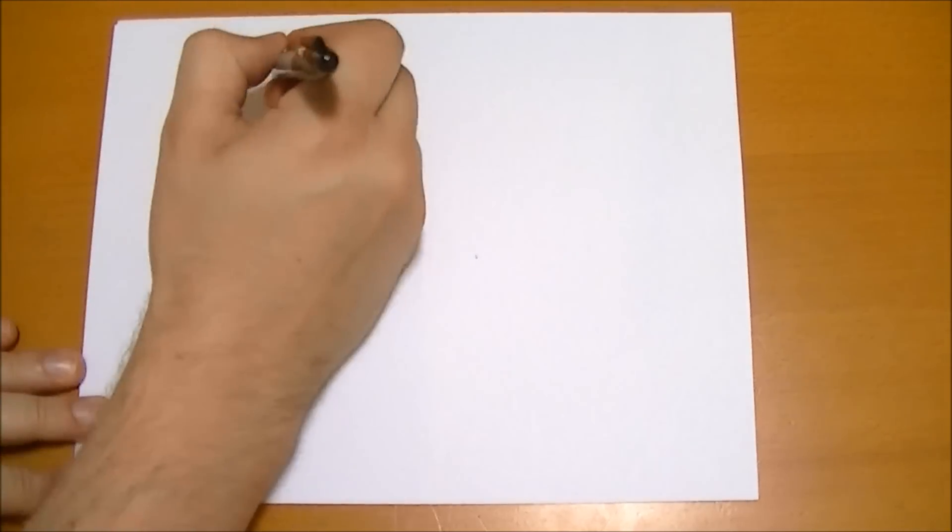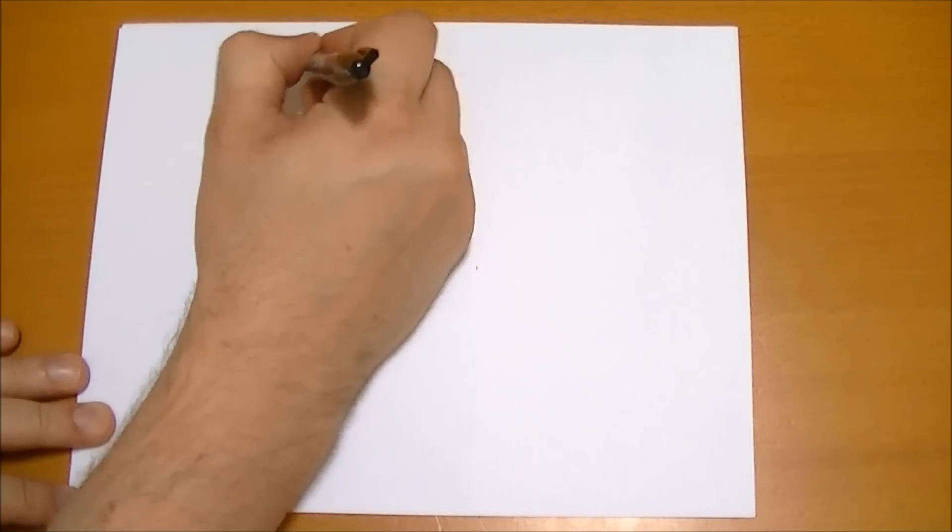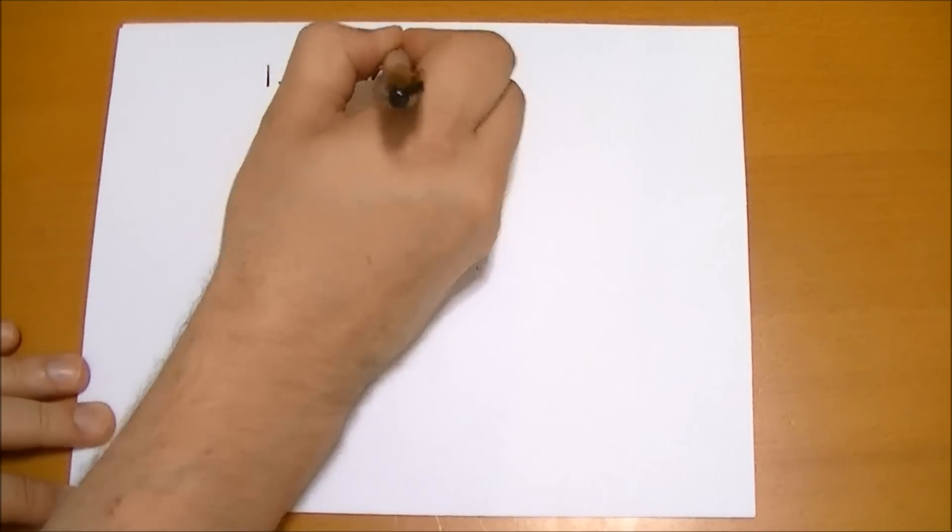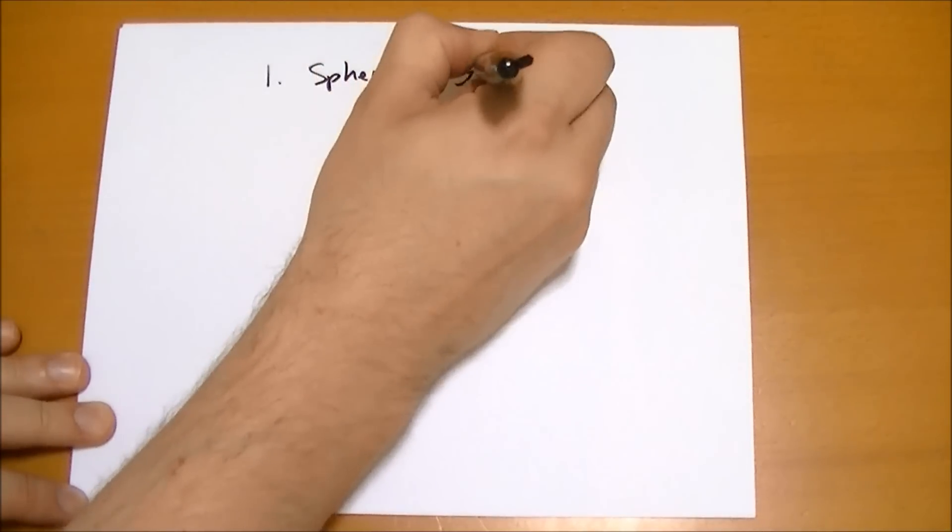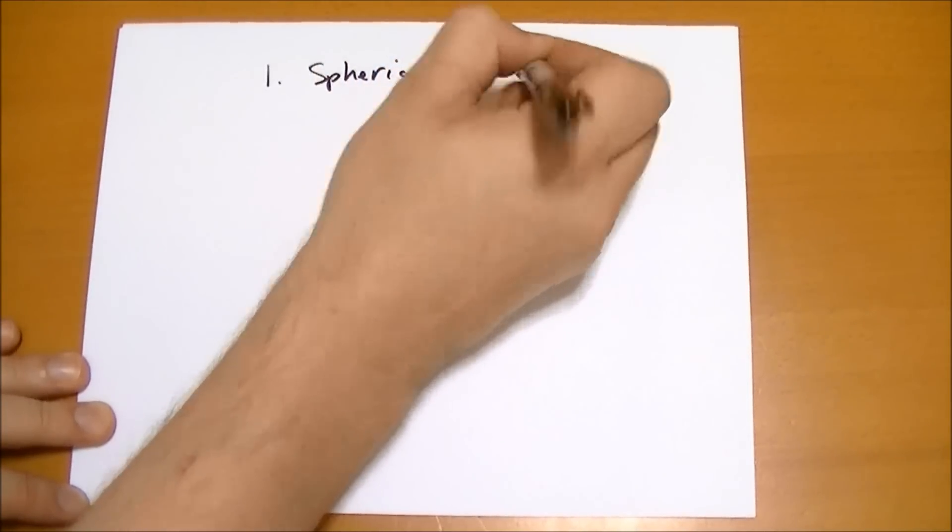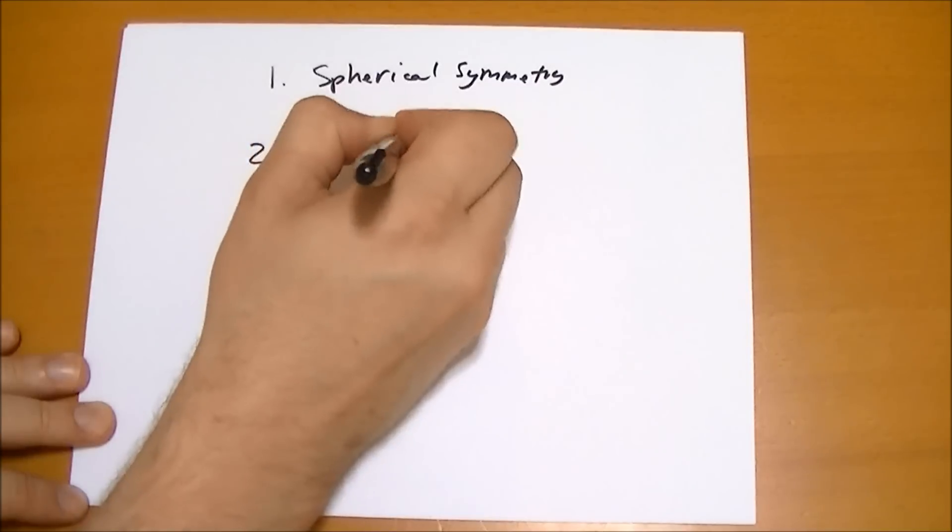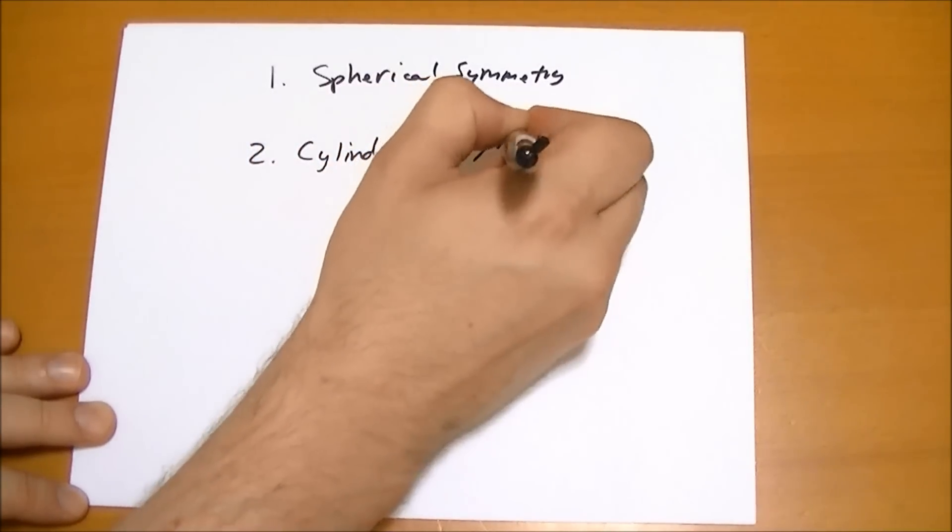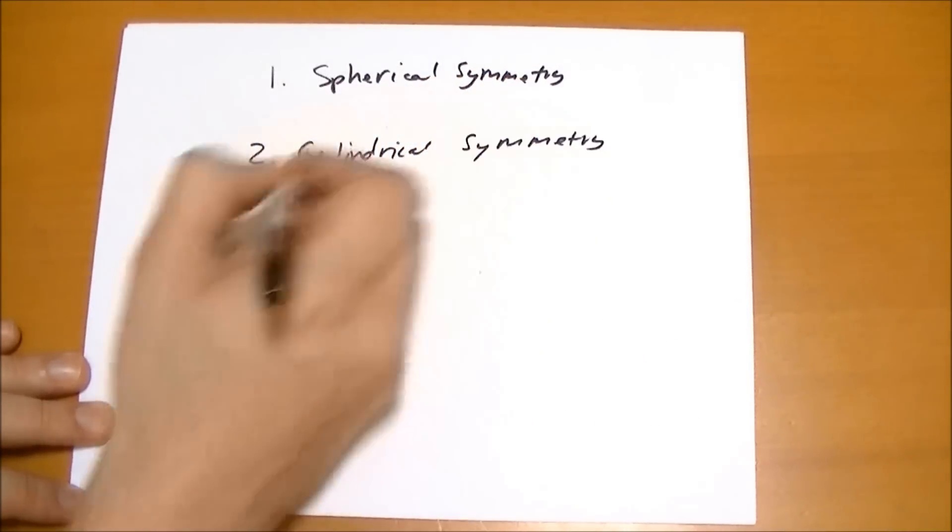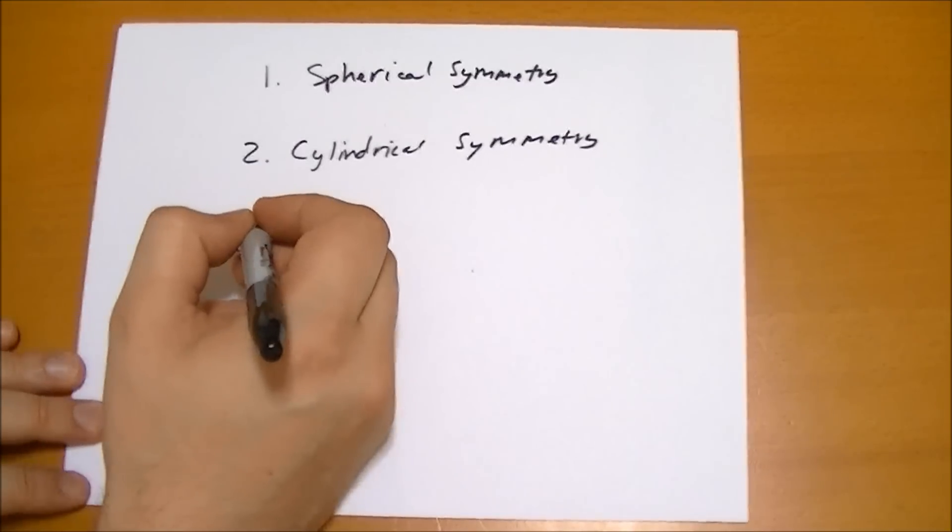Only three cases where you have enough symmetry that you can reduce Gauss's law to something simple. So one is spherical symmetry, as we've already seen. Two is cylindrical symmetry. And three is plane symmetry.